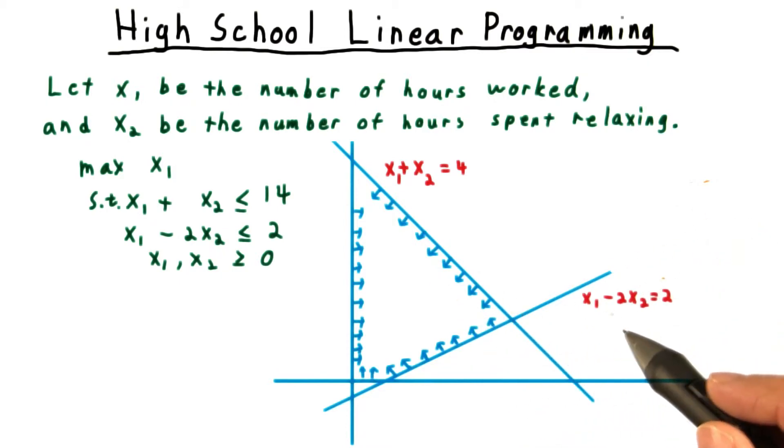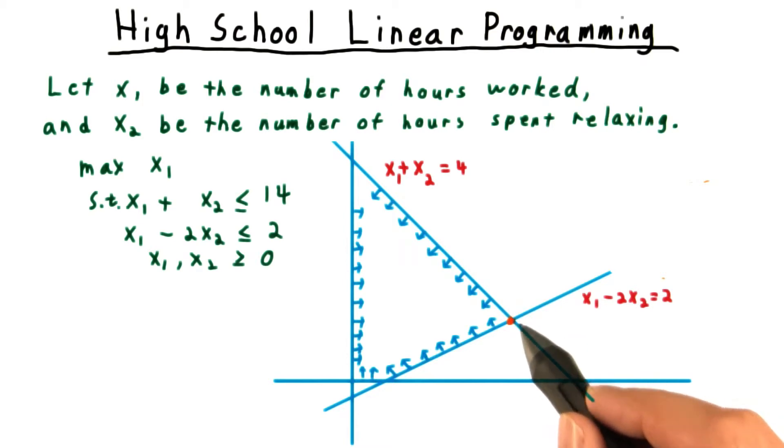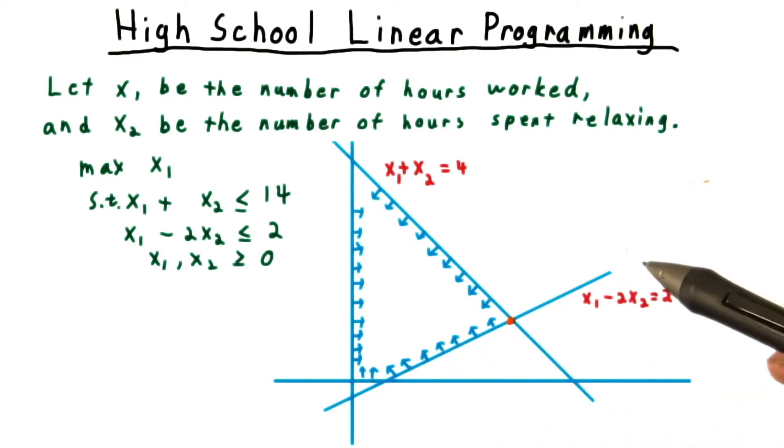After you graph the region, the solution can be picked out as one of the vertices. In this case, it's pretty easy to see that it's this one right here, which is the intersection of these two constraints. Maybe if the formula was a little more complicated and you weren't sure, you could have tested each one of the vertices and picked the one with the highest objective value.